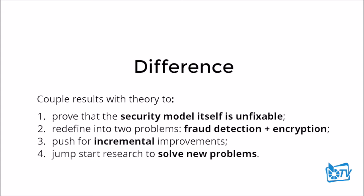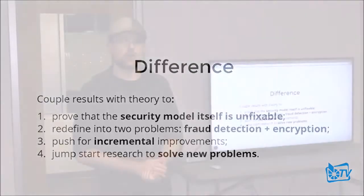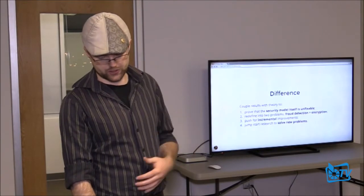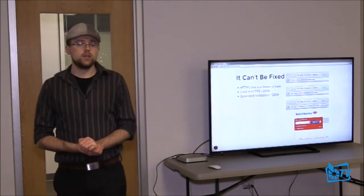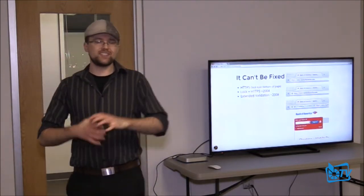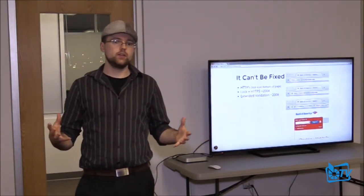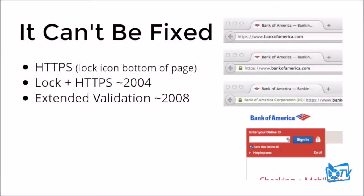I want to push for incremental improvements and new openings for research to solve these larger issues. The security model itself can't be fixed. We went from just showing HTTPS, to showing a lock in the bar, to finally extended validation, which was rolling out sometime in late 2008. This is a model we've tried to patch a few times, but we know isn't working.